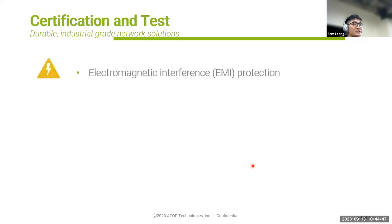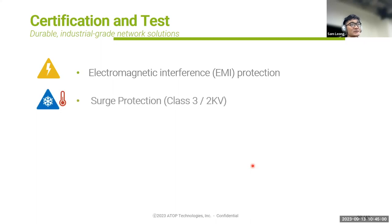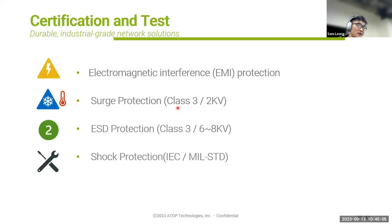Regarding certifications and tests for industrial grade: other concerns include surge protection, ESD protection, and shock protection. The protection classes for industrial products are typically higher than for commercial products.